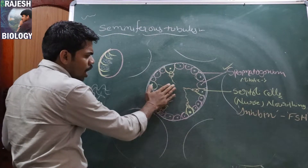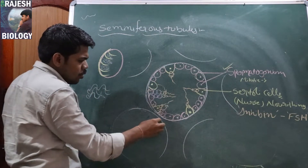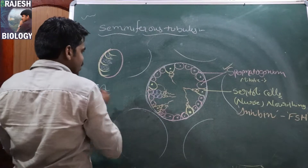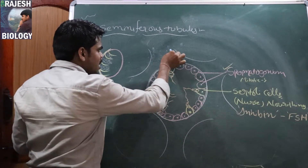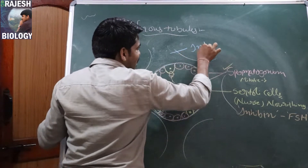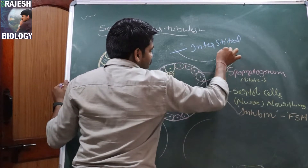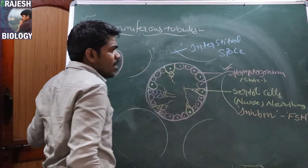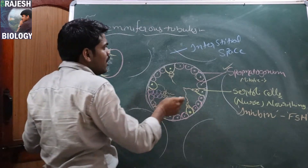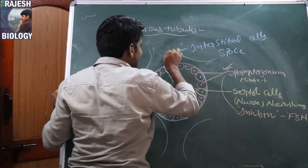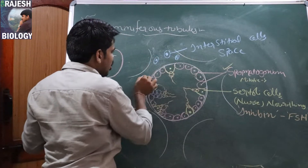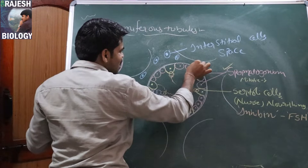Outside the seminiferous tubules, there is a space between adjacent seminiferous tubules. This space is called the interstitial space. The cells present in the interstitial space are called interstitial cells.